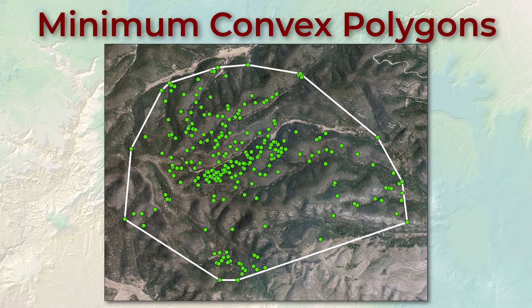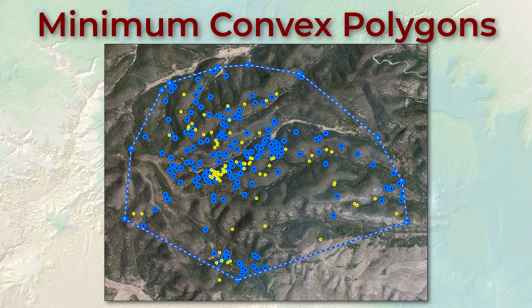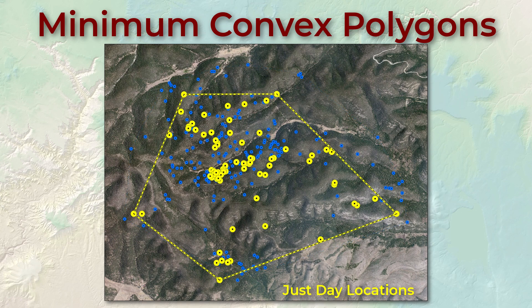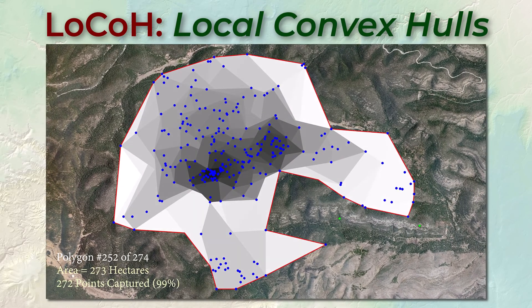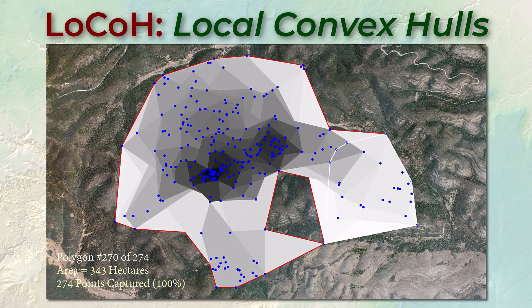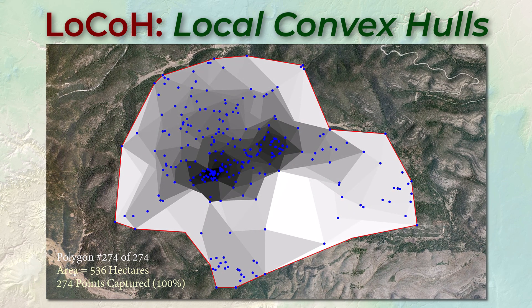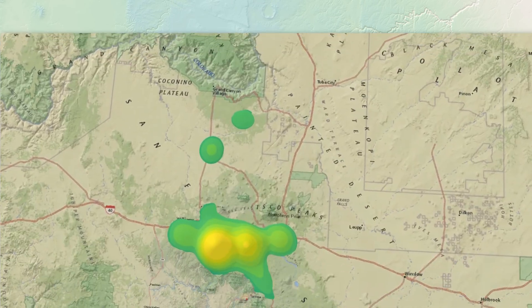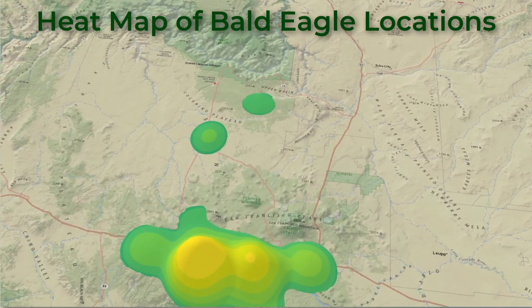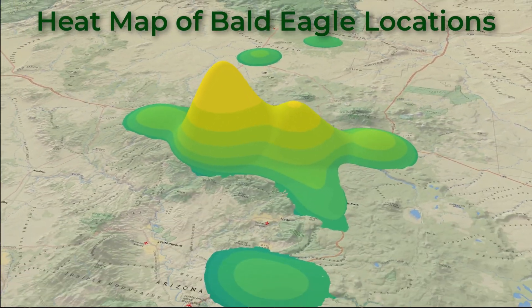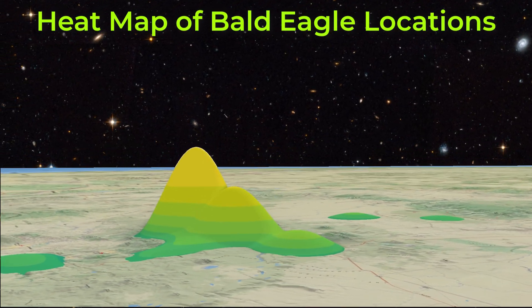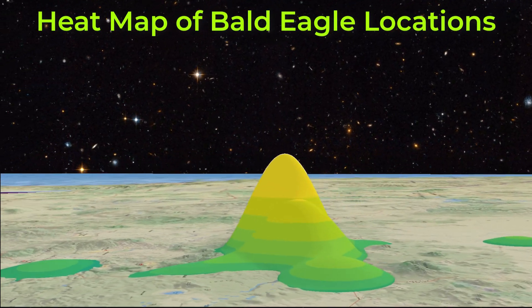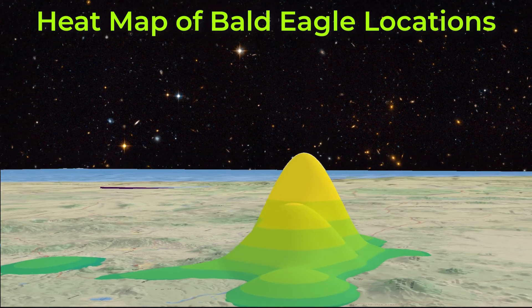We want to know why an animal might select a home range, and the first step toward figuring this out is figuring out what that home range is. Spatial ecology provides a lot of cool tools for determining a home range and many more for understanding why that region might be special. We can generate heat maps on the landscape which show us where important features are and help us understand different phenomena. Here we had a bunch of bald eagle locations and a heat map helps us determine where this eagle seems to be spending most of its time.